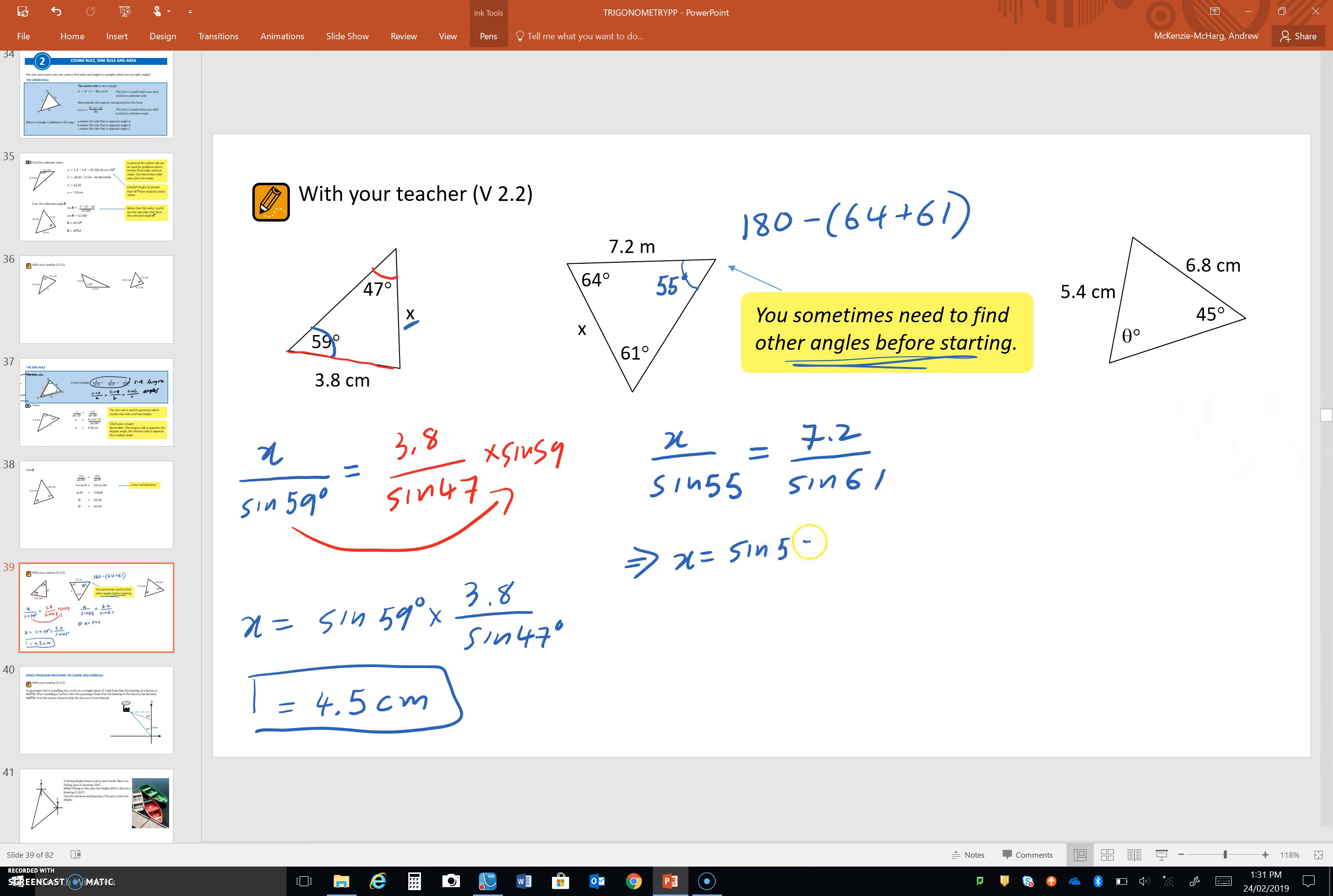This is what we end up with. So, if you have tried this one, you should get 6.7 rounding to one decimal place. Meters, in this case.